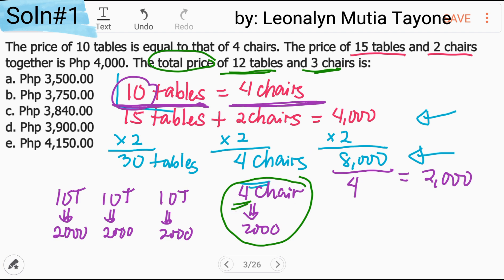Kung 4, itong 2,000 na to i-divide natin ng 4. This is ilan ba yan? 500 each. Tatlong chairs yan. So i-times 3 natin. This is 1,500.